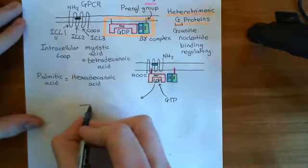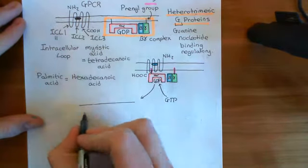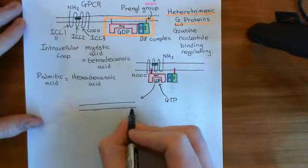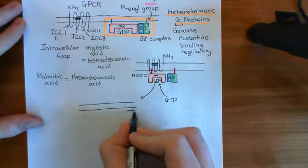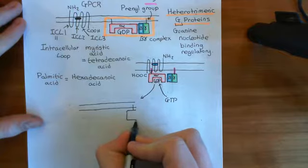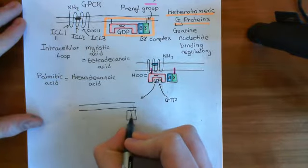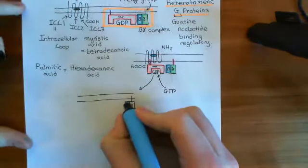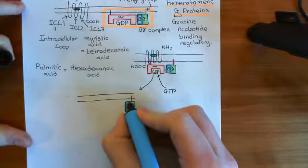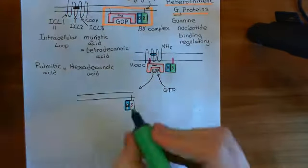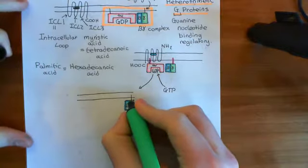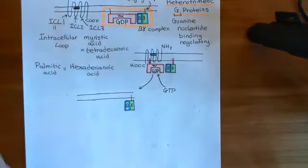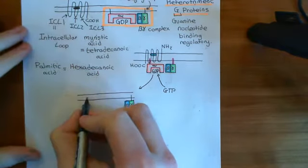The instant GTP binds, the beta-gamma complex breaks away, because it cannot interact with the alpha subunit when it has GTP bound. Without the beta-gamma complex, the alpha subunit also falls off the GPCR. The result is free beta-gamma complexes and free alpha subunits with GTP bound, both wandering in the plasma membrane.